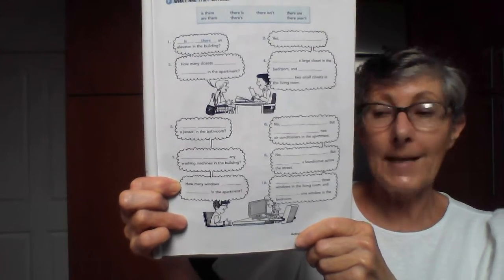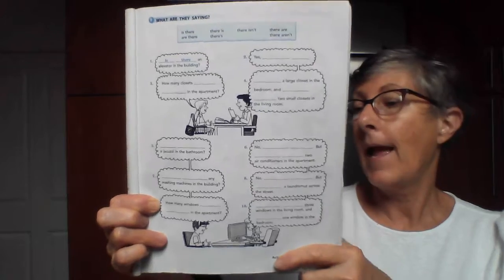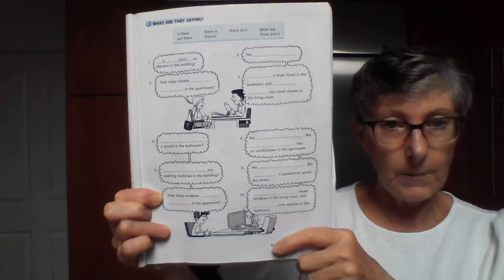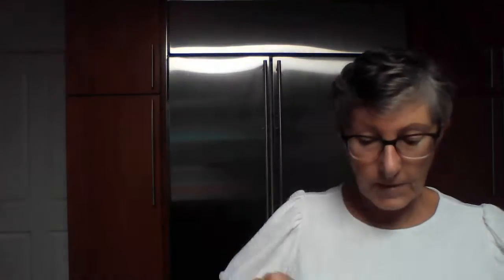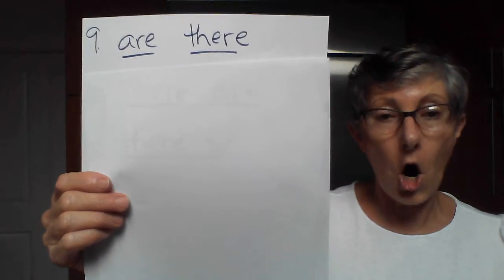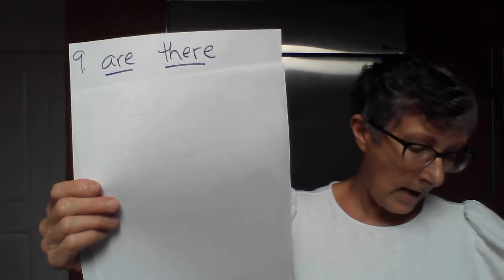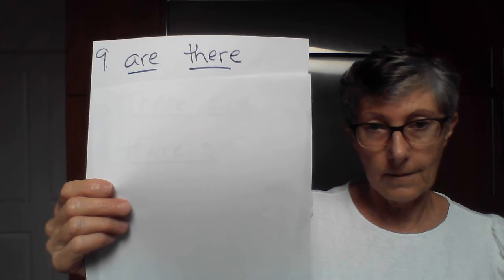Number nine — 'how many' — this is going to be a counting question. How many windows — and it's going to be plural. Number nine is: 'How many windows are there in the apartment?'